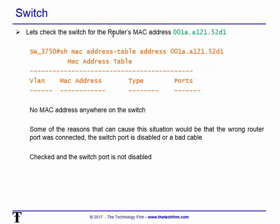So now let's go to the switch and search for the MAC address of that router. Running 'show mac address-table address' with the MAC address — nothing comes back. The problems could be a disabled switch port or a bad cable. I checked the switch: the port is not disabled, so it's not that.